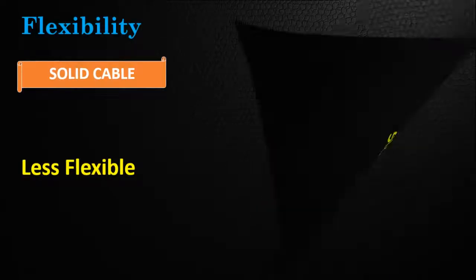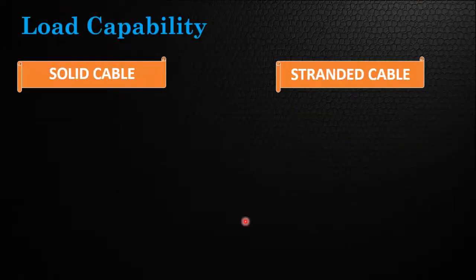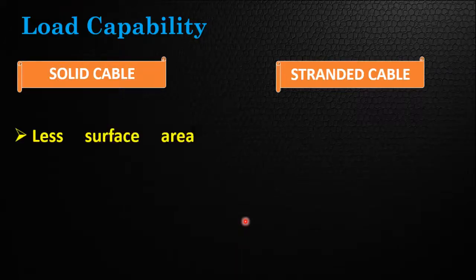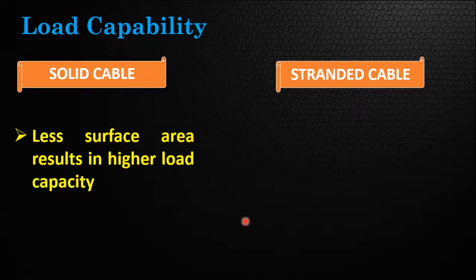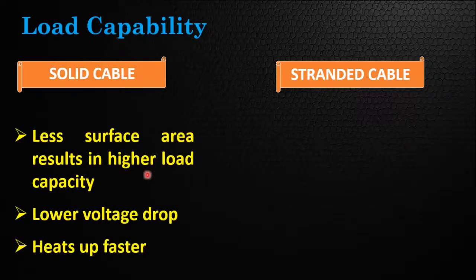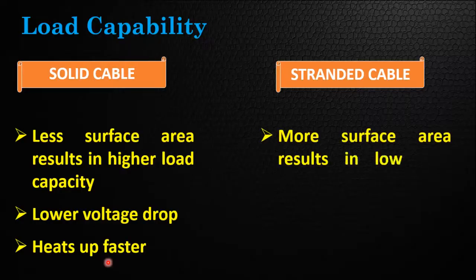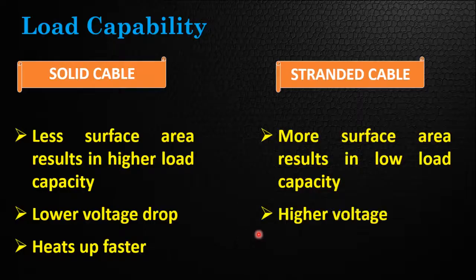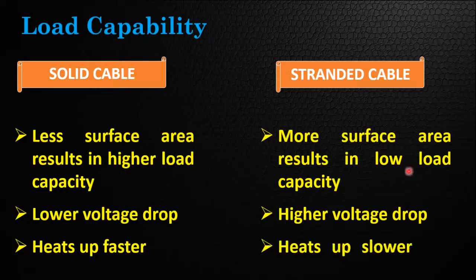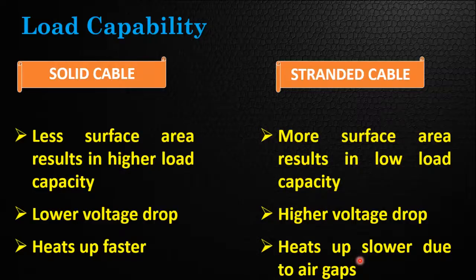Another difference is current carrying capability. Due to zero gap and less surface area for dissipation, solid wire will carry more current than stranded wire. The overall voltage drop is also less due to the larger area of conductor, but it will heat up quickly. Stranded cable has lower current capacity and more voltage drop due to the small conductor area of individual strands, but due to air gaps and large surface area of dissipation, it heats up much slower than solid cable.